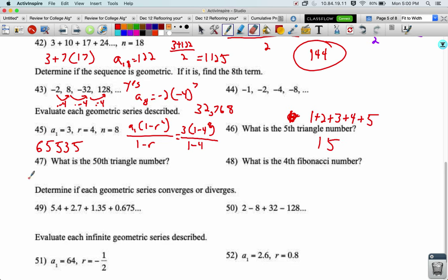When I'm asked for the 50th triangle number, 1 plus 2 plus 3 plus 4 plus 5 all the way up to 50, what I want to do is use my formula for the sum of an arithmetic sequence. I'm going to get that this is 51 over 2, 25.5 times 50, which is 1,275.